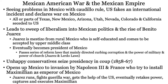Juarez saw that things were failing and wanted to help the lower classes, so he used the Mexican-American War to win elections and take power, becoming president of Mexico for a series of terms. He passed the Lerdo and Juarez laws, which curbed the power of the church and military and reduced corruption. The church owned about 25% of land in Mexico — this took it down to about 5% and redistributed that land to the people. Juarez was actually super popular.